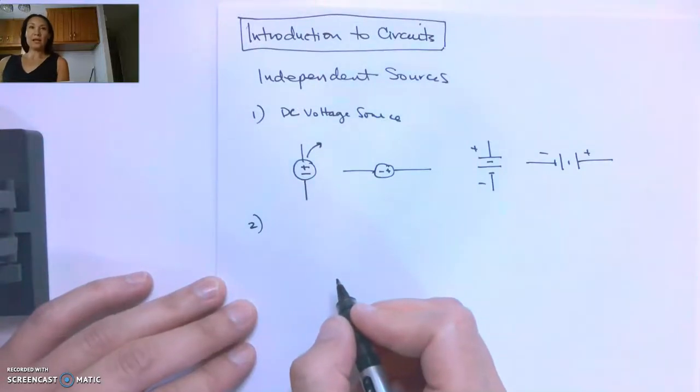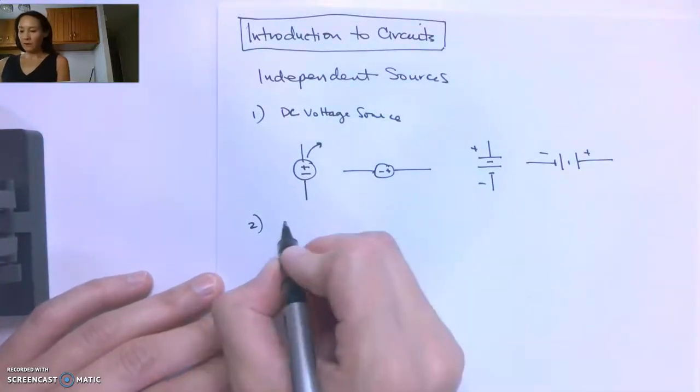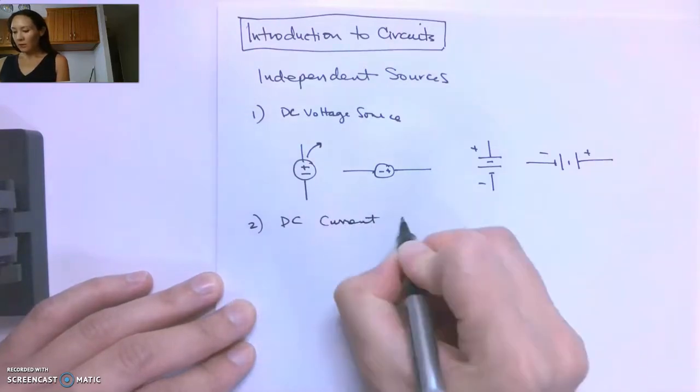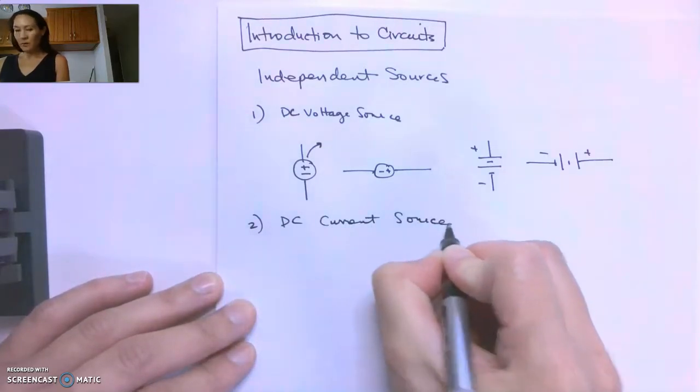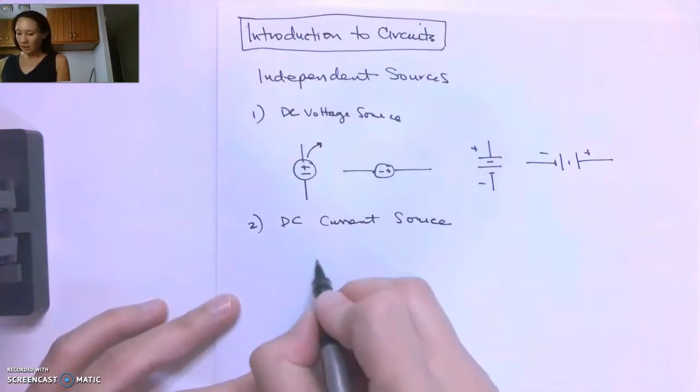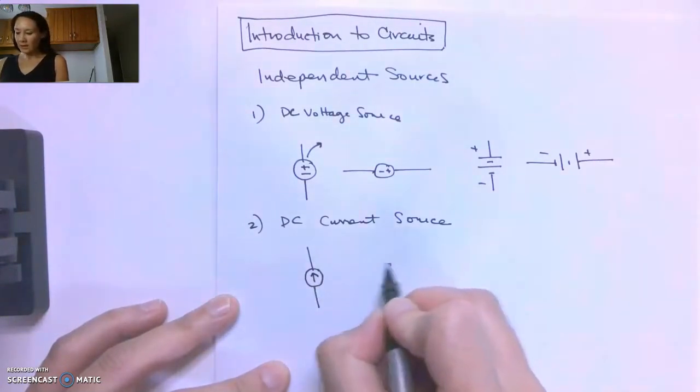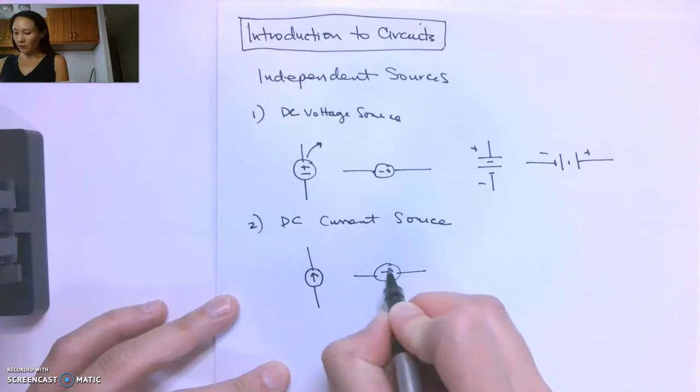Okay, the second independent source we'll talk about is the DC current source. And this looks like it has this circle again, but this one will have an arrow that indicates the direction of current flow.